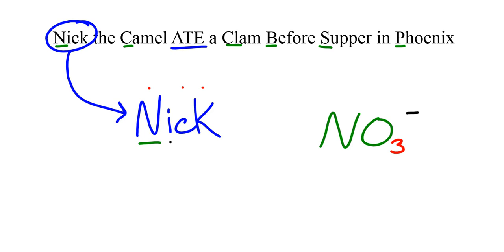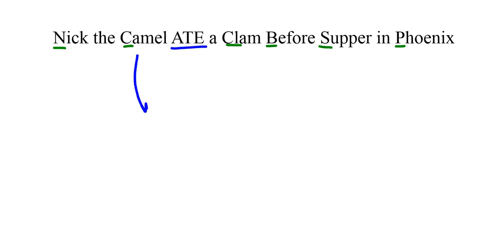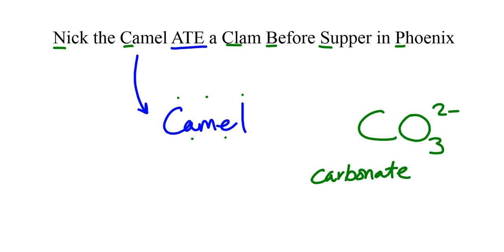So, with this device of consonants representing oxygens and vowels representing charge, then we can open the doors to a lot of polyatomic ions. So, let's go ahead and take a look at CAMEL. So, with CAMEL, I have carbon as my center atom. And, I know there's oxygen. So, consonants, one, two, three. Consonants, vowels, one, two.